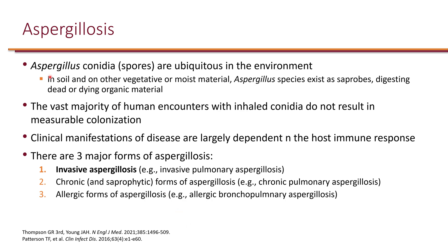Now let's switch gears to aspergillosis. Aspergillus conidia or spores are ubiquitous in the environment — they're everywhere in the soil and any moist material, especially decaying organic material. The primary route of infection is through inhalation, so pretty much most aspergillosis infections are pulmonary aspergillosis, although extra-pulmonary aspergillosis can occur but is not as common. Clinical manifestations are largely dependent on host immune response. Aspergillosis is broken into three types: invasive aspergillosis, chronic forms, and the allergic form.